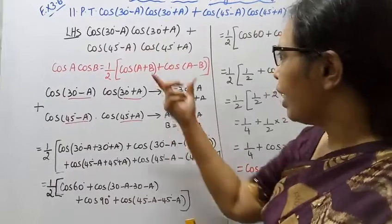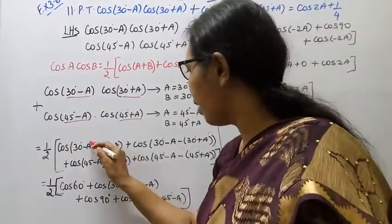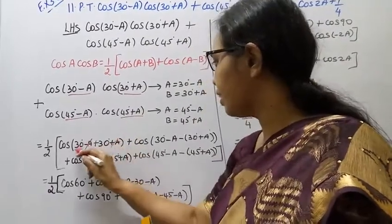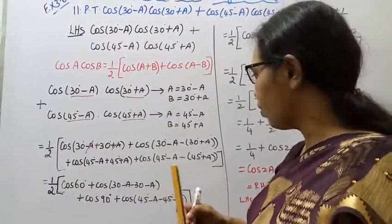Substitute the identity. Half cos, this cancels minus A, plus A cancels, 30 plus 30 degree, cos 60 degree, plus cos.